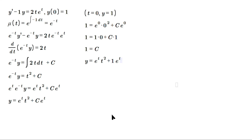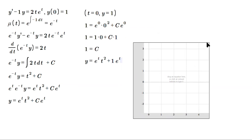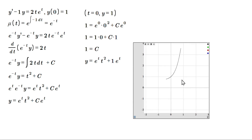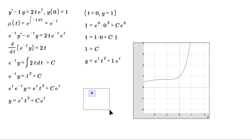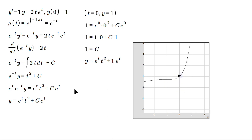Here's a quick graph of this particular solution, y = t²·e^t + e^t, just to see what it looks like. Notice that because of the initial condition, at t equals zero, y equals one — and the graph does indeed pass through that point.